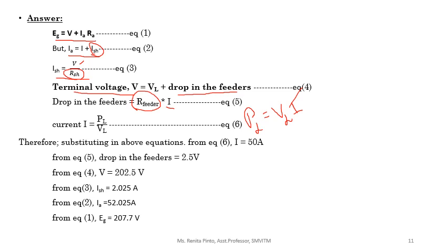Once terminal voltage V is found, substitute into ISH equation. Once ISH is found, substitute into IA equation. Once IA is found, substitute into EG = V + IA·RA to find the final answer EG. I hope you have understood.